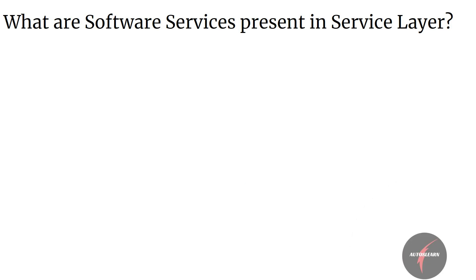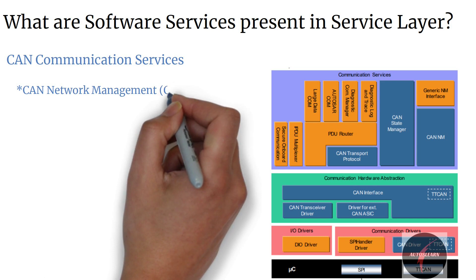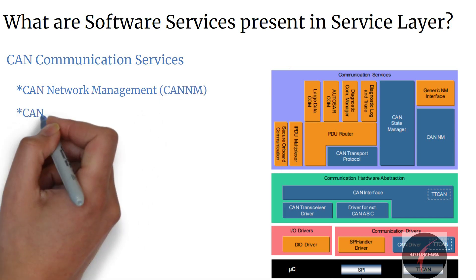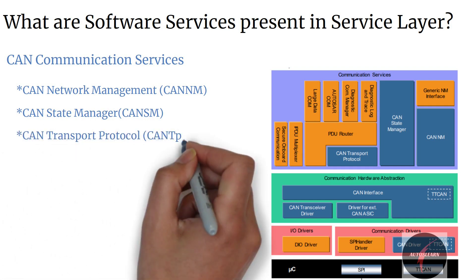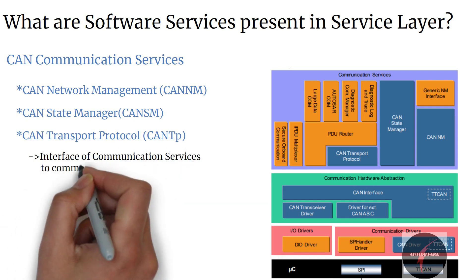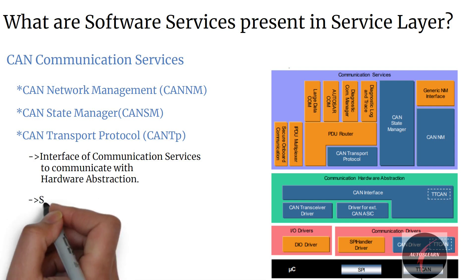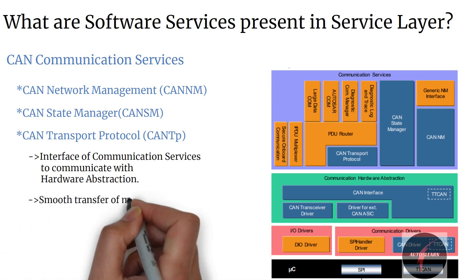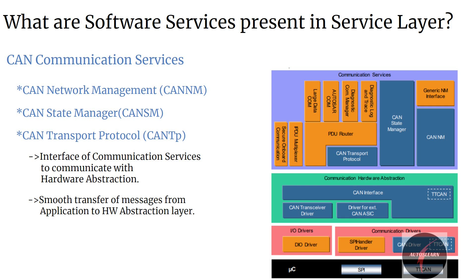Looking deeper into CAN communication services, we have CAN NM — the CAN network management module — then CAN state manager, and CAN transport protocol also called CAN TP. These modules work at the interface of the communication service to communicate with the hardware abstraction layer, and help manage and synchronize the network of messages from the application to the hardware abstraction layer.